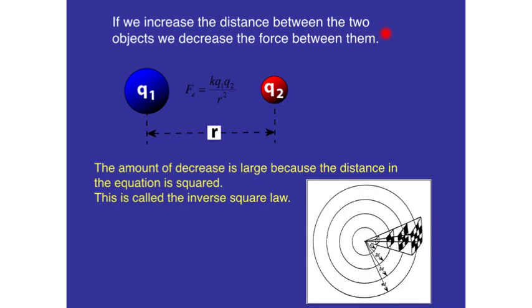If we increase the distance between the two objects, we decrease the force. But this is going to have a much bigger impact because the distance between them is squared. We call this the inverse square law. So here in this little bullseye, if we had a distance of 1, we would have a force equal to that little square there. But if we doubled the distance, we would have 4 times the force. And if we tripled the distance, we would have 9 times the force. And if we quadrupled the distance, we would have 16 times the force. This is called the inverse square law.